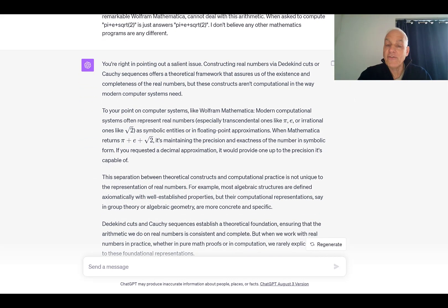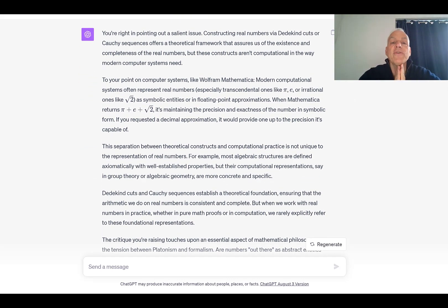ChatGPT: You're right in pointing out a salient issue. Constructing real numbers via Dedekind cuts or Cauchy sequences offers a theoretical framework that assures us of the existence and completeness of the real numbers, but these constructs aren't computational in the way modern computer systems need. To your point on computer systems, like Wolfram Mathematica, modern computational systems often represent real numbers, especially transcendental ones like pi, e, or irrational ones like root 2, as symbolic entities or in floating-point approximations. When Mathematica returns pi plus e plus square root 2, it's maintaining the precision and exactness of the number in symbolic form. If you requested a decimal approximation, it would provide one up to the precision it's capable of. Again, that's assuming that there really are such things as pi plus e plus square root 2, right? That's the whole point. We're having this discussion about whether those things actually mean anything, or they're just like symbols on a page.